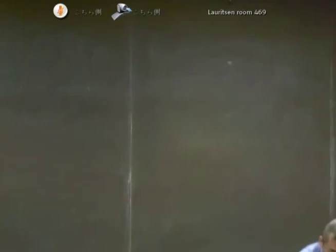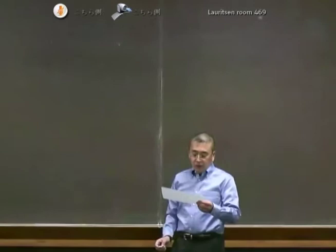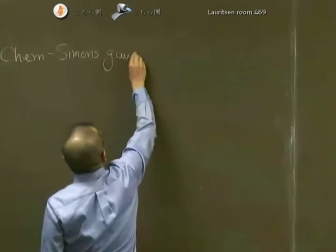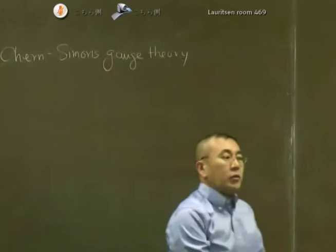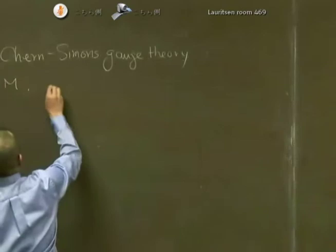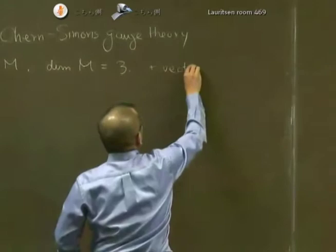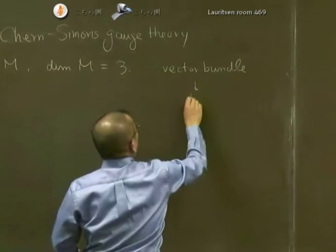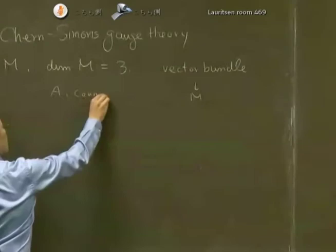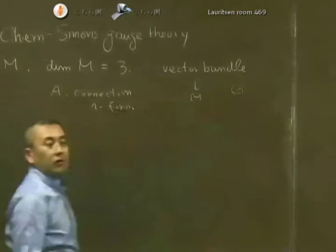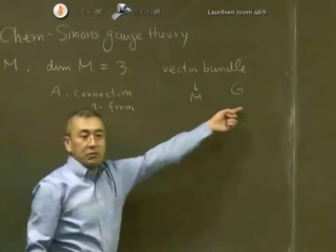This is the last meeting of this class. Today I will tell you about Chern-Simons gauge theory. We'll be considering a three-dimensional manifold, and we assume that there is a vector bundle over this manifold. There is a connection A, a one-form, and there is a gauge group G acting on it. So A takes value in the adjoint representation of the group G.